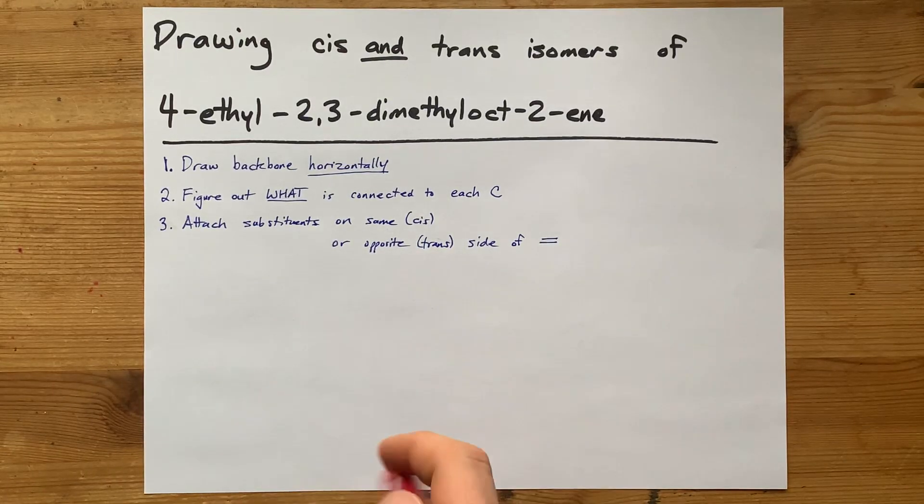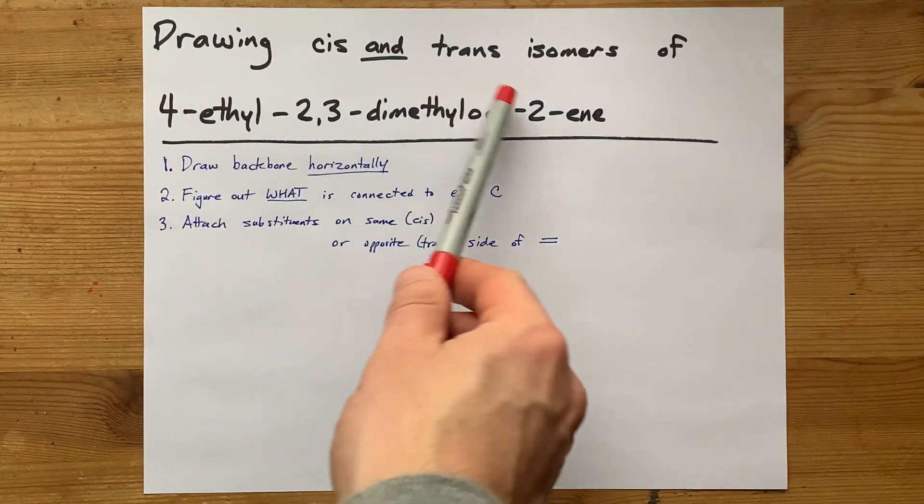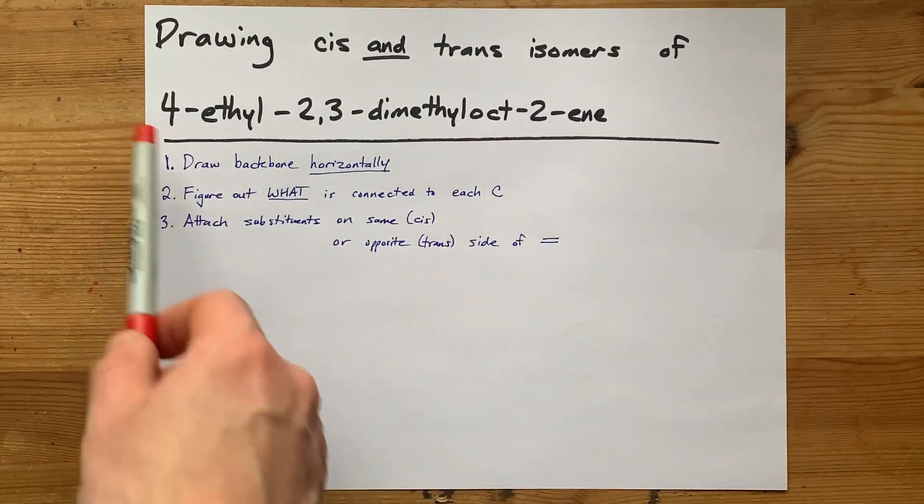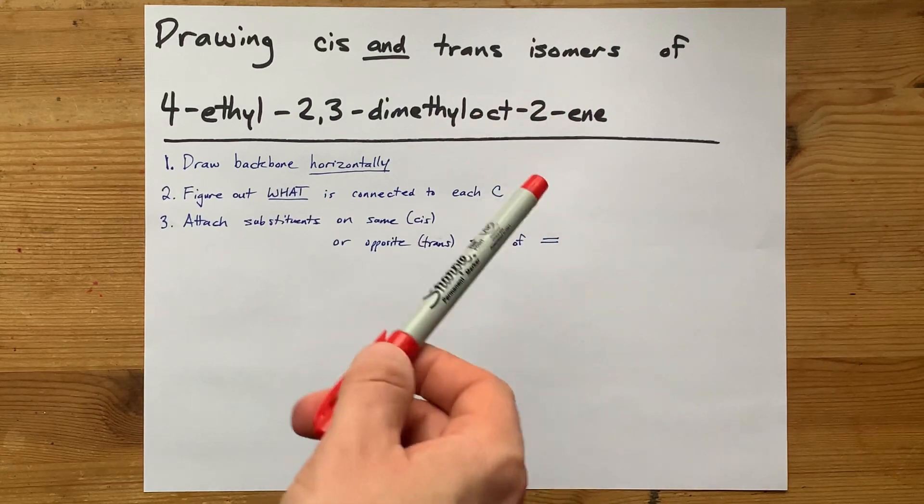Question from a fan on Discord. Can we draw the cis and trans isomers of this admittedly complicated molecule, 4-ethyl-2,3-dimethyloct-2-ene?